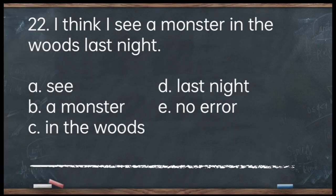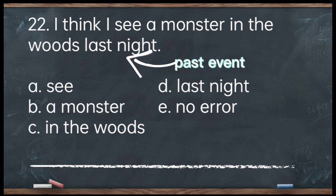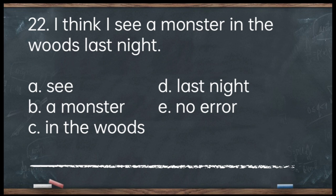Number 22. I think I see a monster in the woods last night. A. See. B. A monster. C. In the woods. D. Last night. E. No error. The answer is letter A — 'see.' Last night is already done; it's finished. Therefore, the verb should be in the past tense. Corrected: I think I saw a monster in the woods last night.